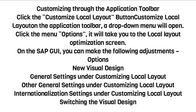On the SAP GUI, you can make the following adjustments: Options, New Visual Design, General Settings under Customizing Local Layout, Other General Settings under Customizing Local Layout, and Internationalization Settings under Customizing Local Layout.